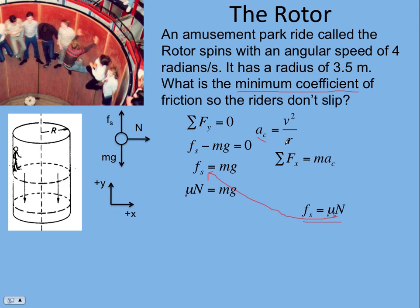Centripetal acceleration a_c is the linear speed squared over the radius, v²/r. But here we're given the angular speed, so there's a way to write this in angular form. The linear speed is v = ωr. Substituting and squaring gives a_c = ω²r.